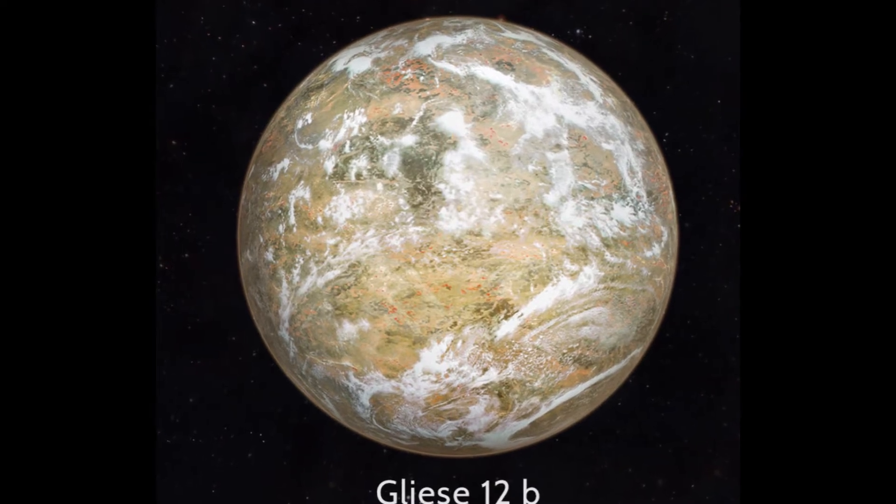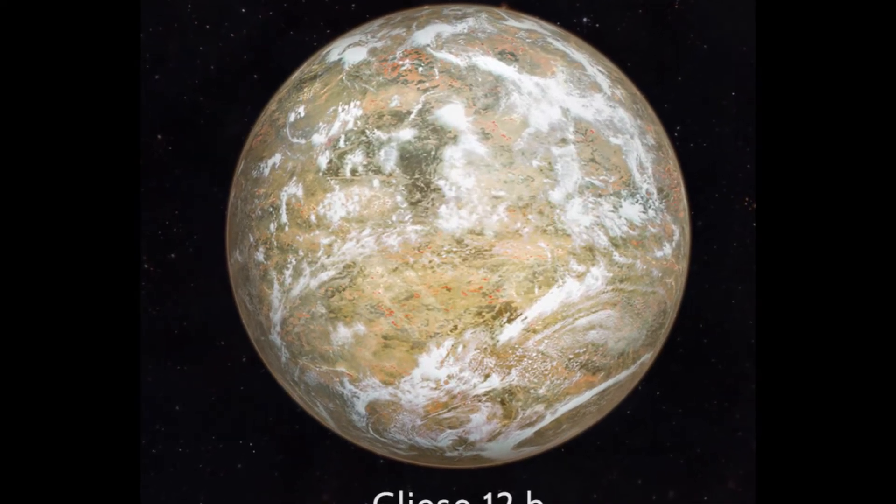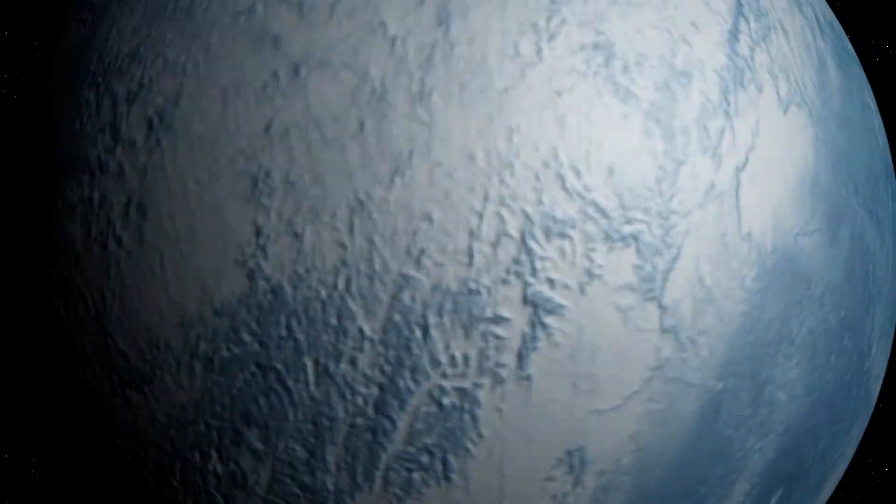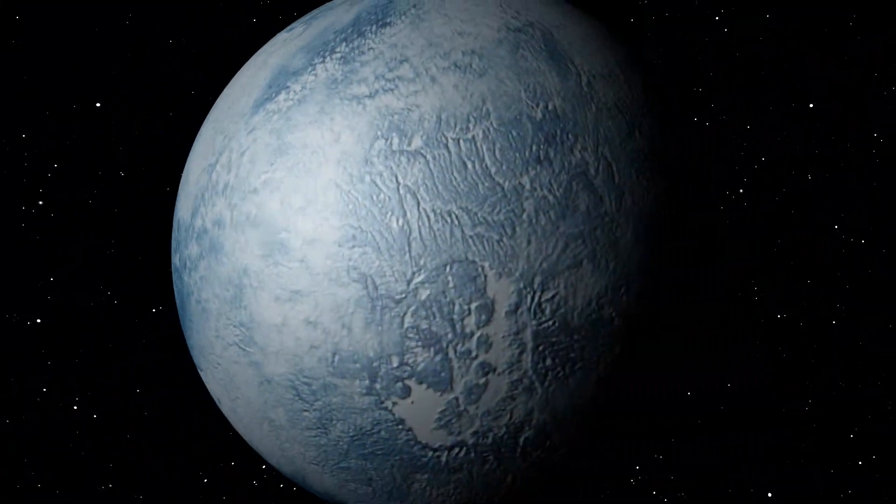Gliese 12b is a newly discovered planet in the constellation Pisces, only about 40 light-years from Earth. While not particularly close, it is one of the nearby exoplanets on astronomical scales.